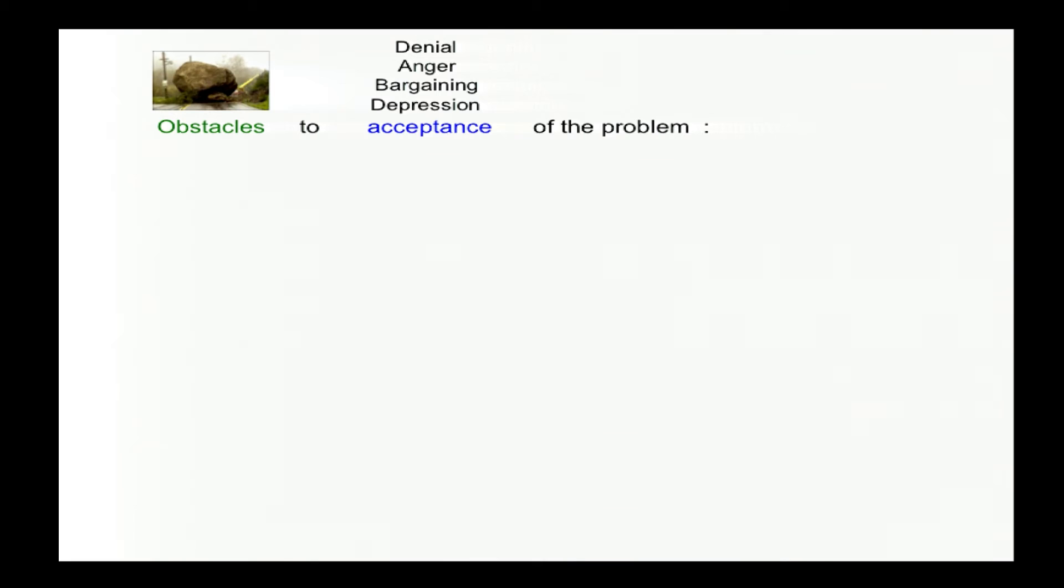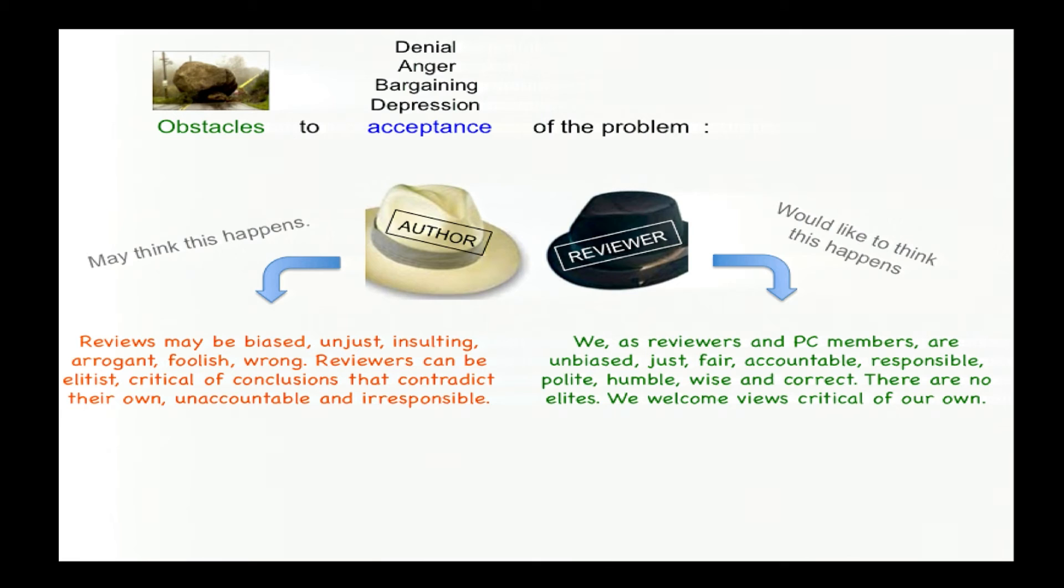I've discussed that there is a widespread presence of complaints. But this isn't the same thing as an actual community acknowledgement of a problem. And I think we need to start there. Because unless we wholeheartedly accept that, we're going to have trouble thinking about change. And towards that there are at least two obstacles to overcome. The first is that most of us wear two hats. We're sometimes authors and sometimes PC members. And sometimes we wear the hats on top of one another since PC members are often authors. And in the two positions we may think different things. So while in the position of an author the kind of critiques I've made earlier might resonate with us, as PC members we may prefer instead to think that we are unbiased, just, fair, accountable, responsible, polite, humble, wise and correct. And we have no elites and we welcome critical views and so forth. But one ought to appreciate that both these things can't be true.